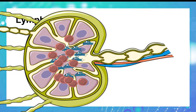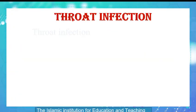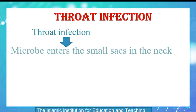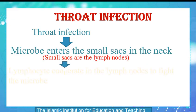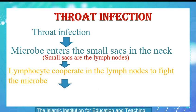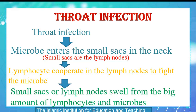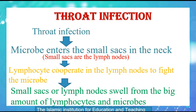As a result, after a throat infection, microbes enter the small sacs of the neck, which are the lymph nodes. Lymphocytes cooperate in the lymph nodes to fight the microbe. The small sacs — lymph nodes — swell from the large amount of lymphocytes and microbes.